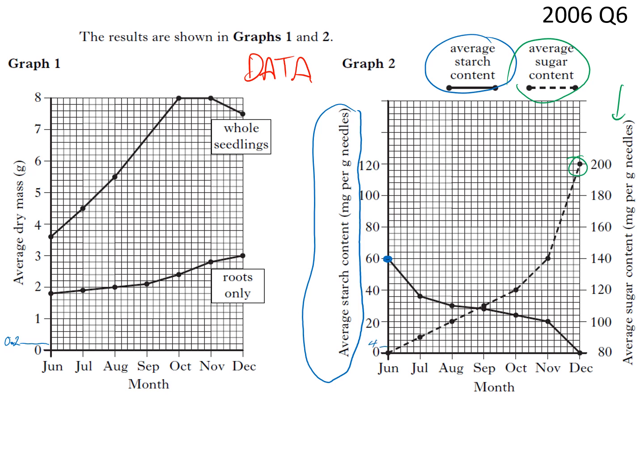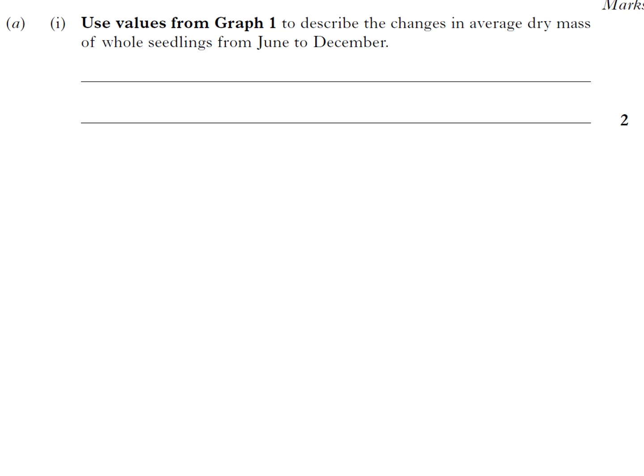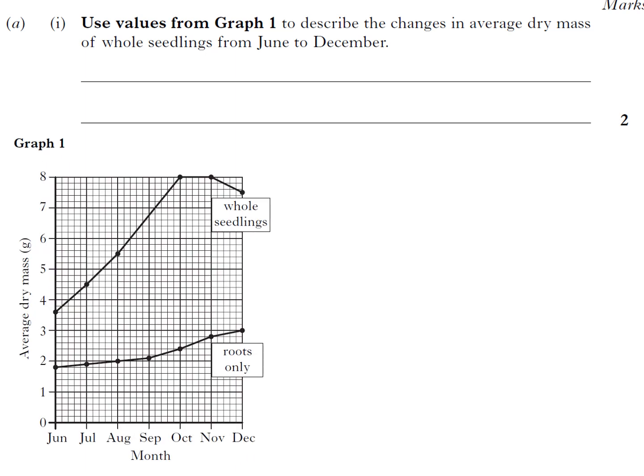And this one here is also going up in fours. So this is a describe question. These are very common. You're asked to use values from Graph 1 to describe the changes in the average dry mass of the seedlings from June to December. It is worth two marks.